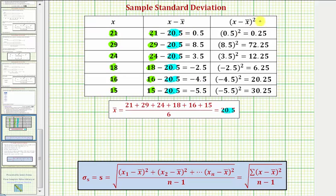The next step is to square the deviations. So we took the deviations here and then squared them in the next column.